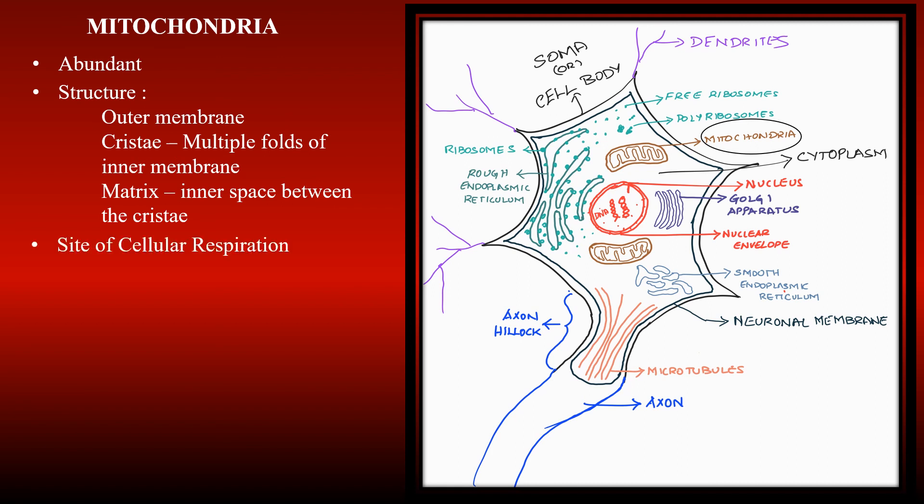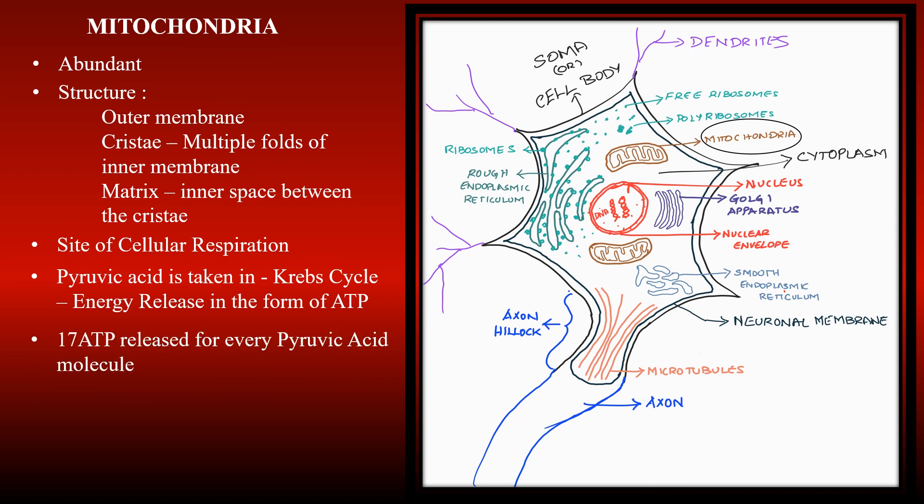The mitochondria is the site of cellular respiration. Pyruvic acid present in the cytosol gets taken inside. Krebs cycle occurs. During this, energy is produced in the form of ATP. This ATP is the energy currency of the cell and fuels most of the reactions that take place in the neuron. This is why mitochondria is called the powerhouse of the cell.